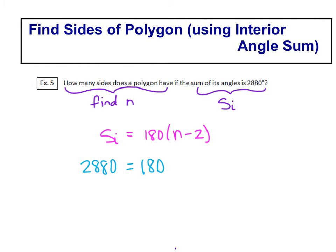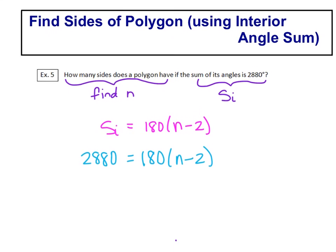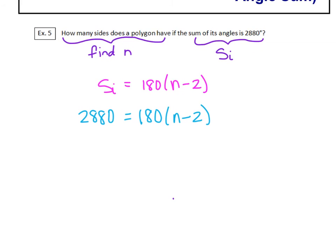And we're going to write the rest of this, and we're going to solve this for n. So now it's just a basic algebra equation. Any time that you have an equation that has parentheses, we've always distributed first.